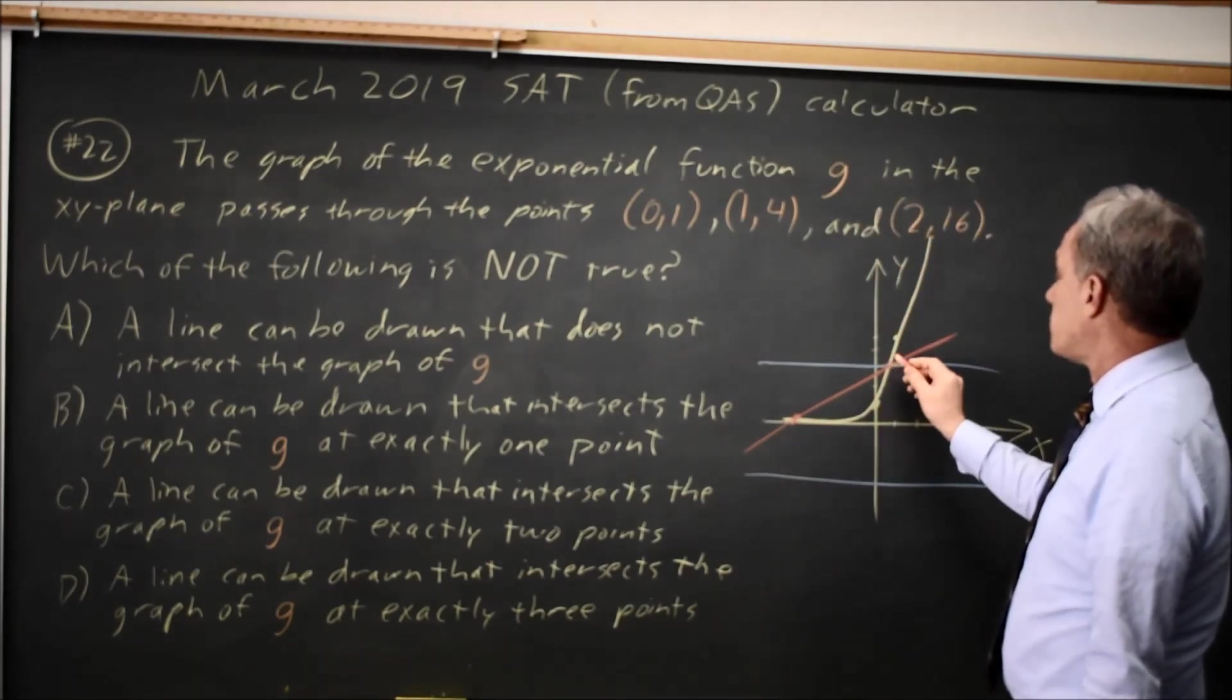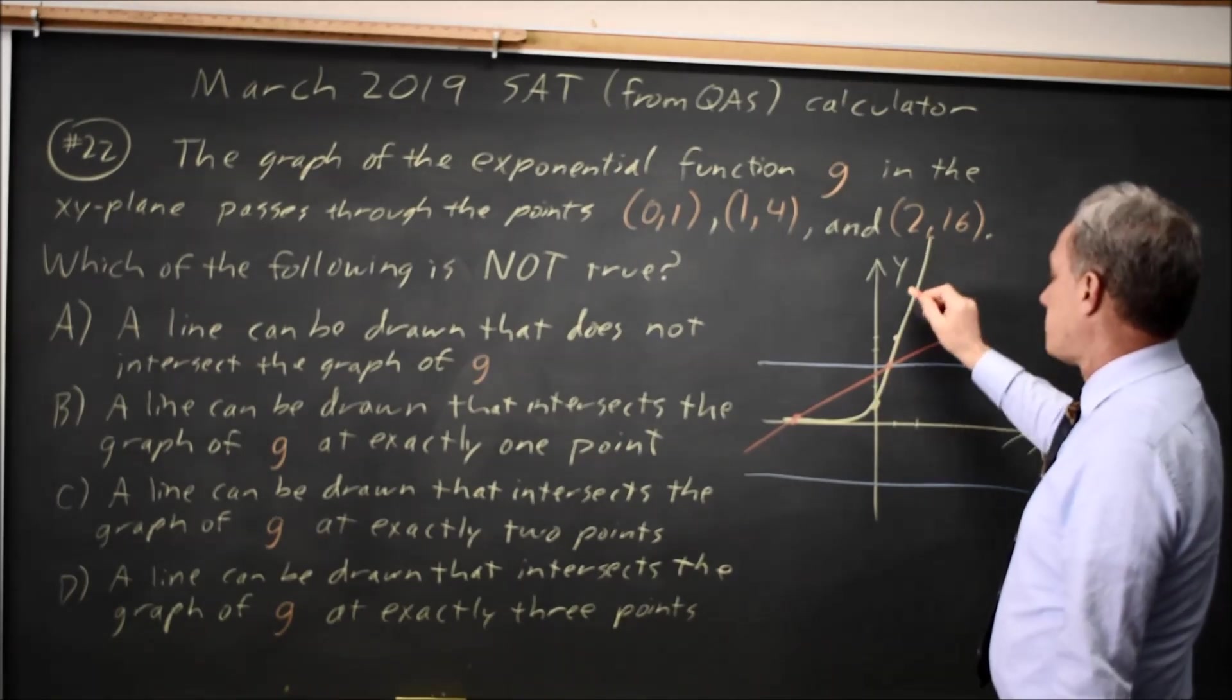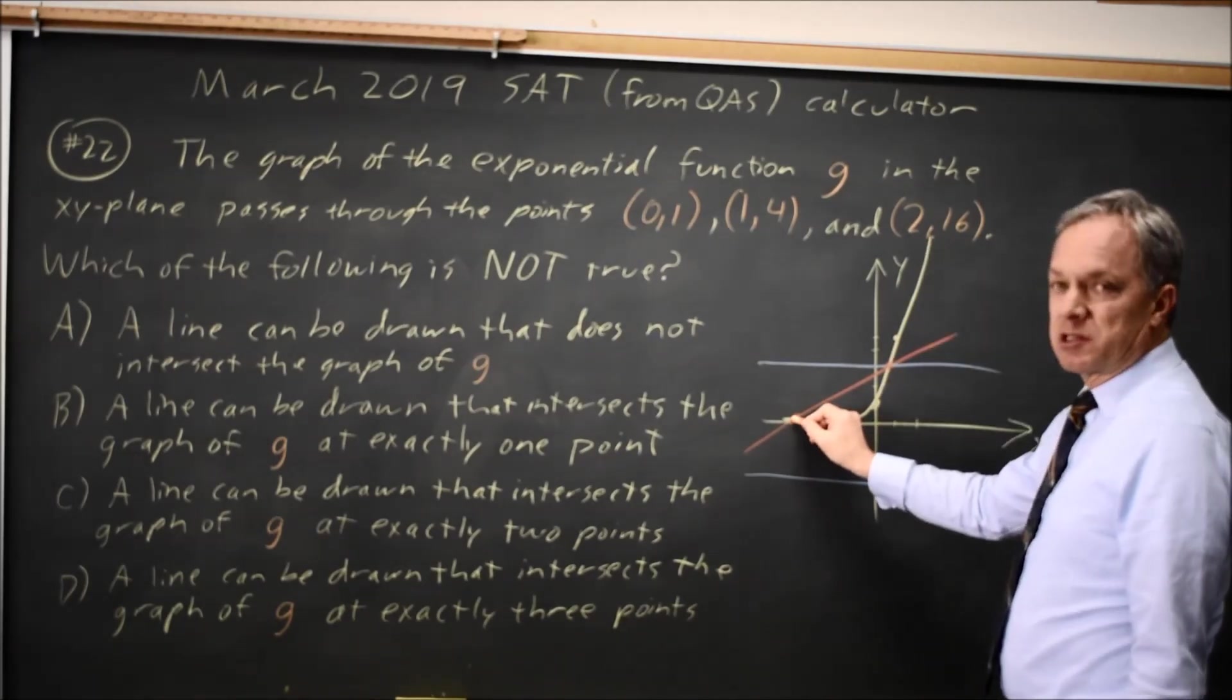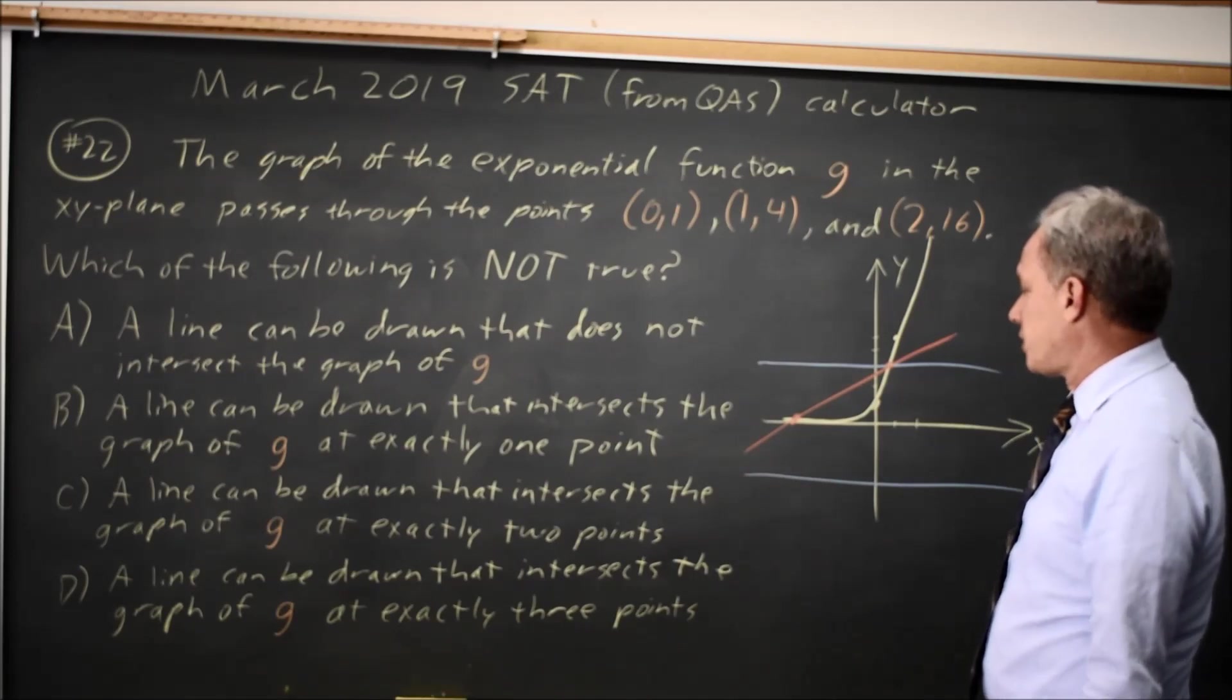For any x value bigger than this one, my line will be below the exponential. For any x value smaller than this one, my line will again be below the exponential.